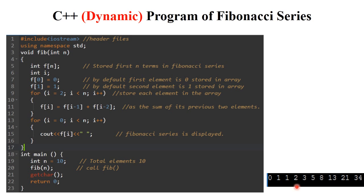They call the function fib — that is the Fibonacci function — and pass the parameter n with value 10. The pointer goes to the fib function, which is declared before the main function. void fib(integer n): void is the return type. The first step inside the function declares an array: integer f[n], where f is the array name holding n (10) elements.